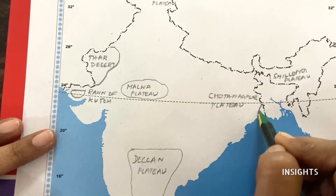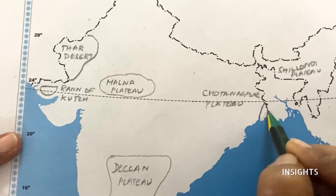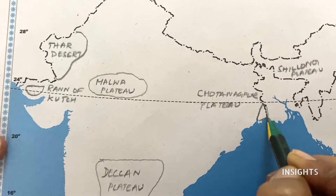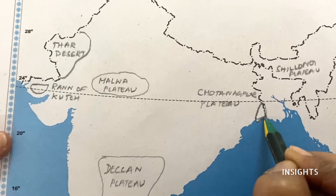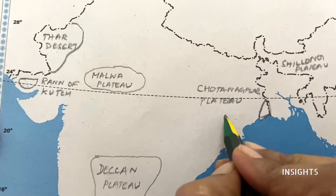In this area, there is mangrove forest or tidal forest. You can mark it here. This is called Sundarbans.